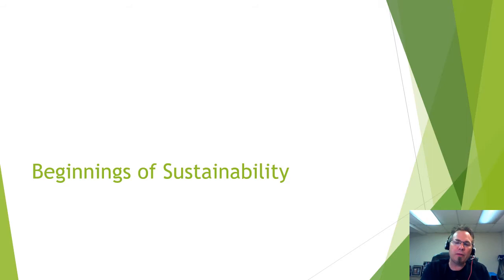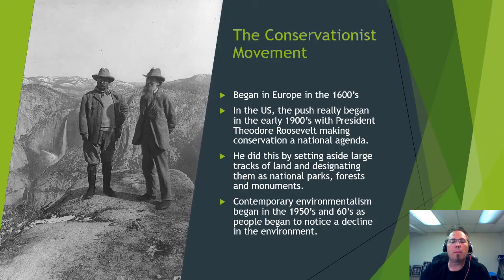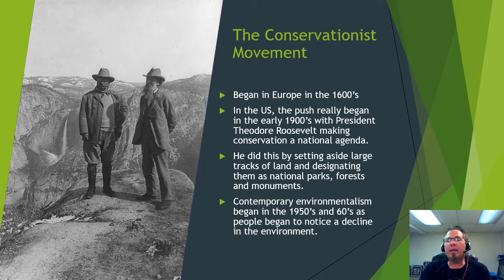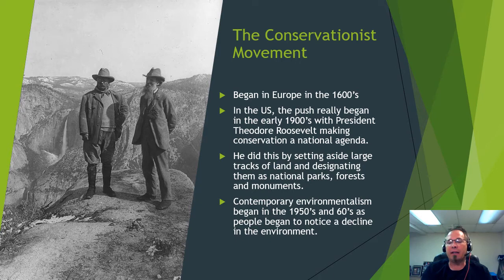Now getting into more of the Chapter 2 material — the beginnings of sustainability. This chapter is a bit of history and policy. There have been naturalists and conservationists going back to the 1600s, but from America's perspective it really started in the early 1900s. President Teddy Roosevelt was the first president to make it a national agenda — he put people to work planting trees and realized how important it was to conserve America's natural places.